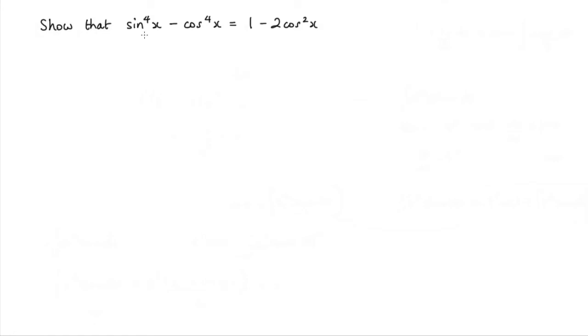In this question, we're asked to show that sine to the fourth power of x minus cos to the fourth power of x is equal to 1 minus 2 cos squared x.